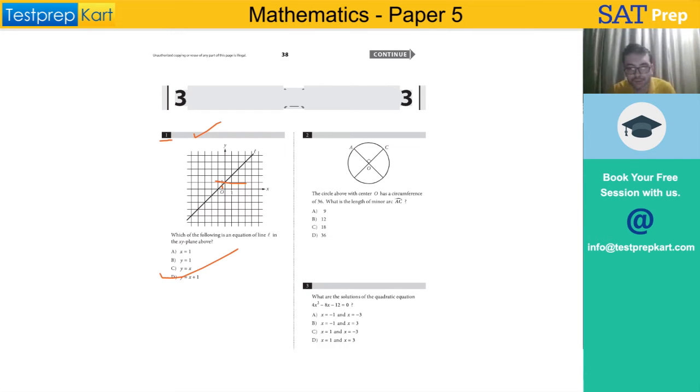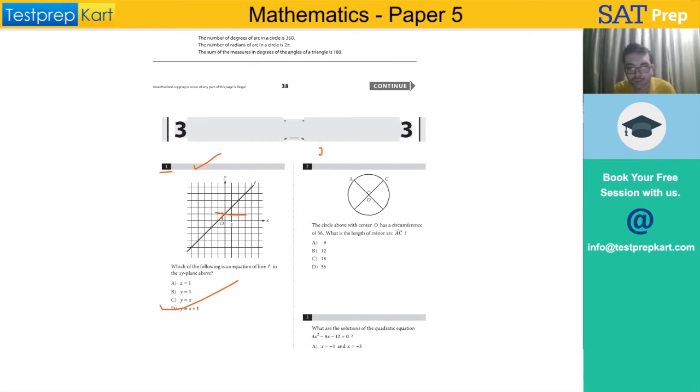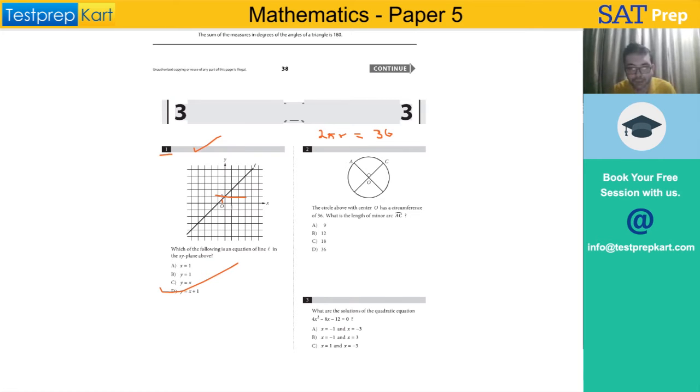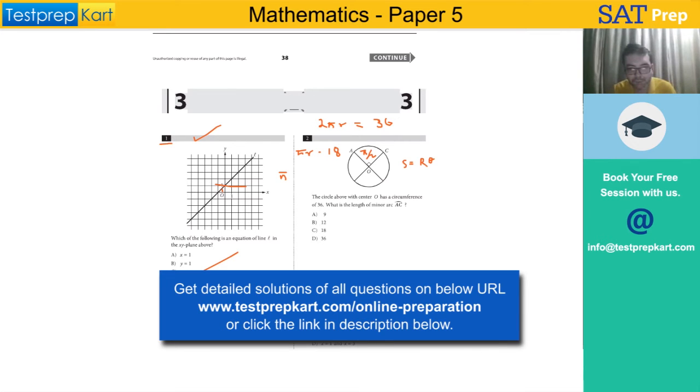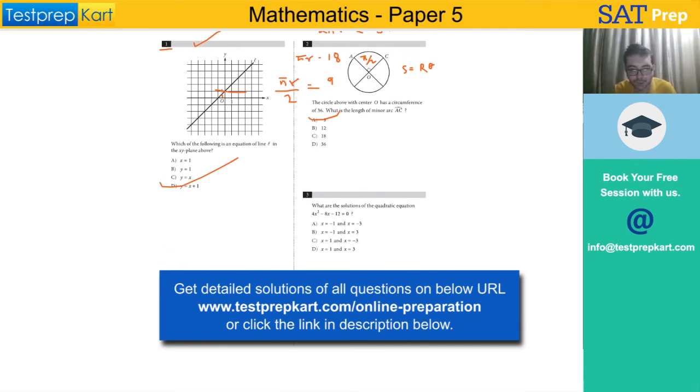Question number 2: The circle above with center O has circumference 36. What is the length of the minor arc? We have 2πr = 36, so πr = 18 (36 divided by 2 is 18). This is π/2, so π/2 multiplied by... using the formula s = rθ. Dividing both sides by 2 again, πr/2 = 9. So the answer is 9.